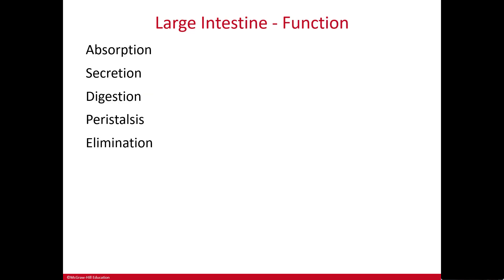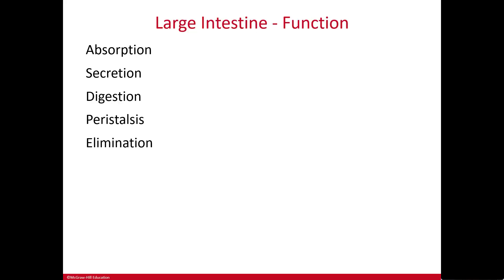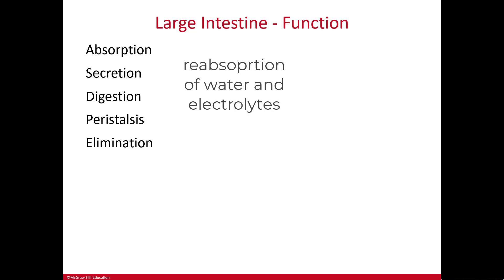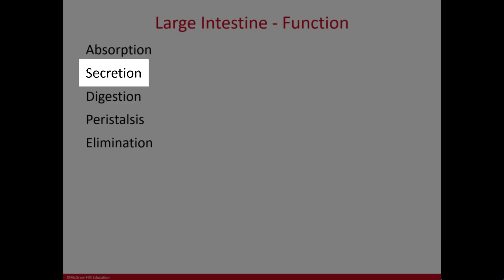The main function of the large intestine is absorption — specifically absorption of water and electrolytes. Most digestion has already occurred in the small intestine. The large intestine receives more than a liter of chyme each day from the small intestine and reabsorbs water and electrolytes, reducing that volume down to about 100–150 milliliters of feces that are eliminated.